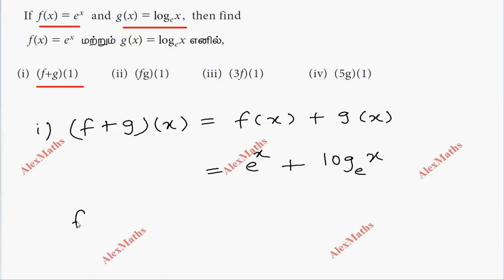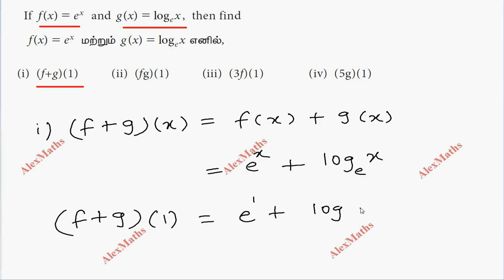The question is f plus g of 1. If you substitute x equal to 1, you get e power 1 plus log 1 base e. E power 1 is equal to e, and log 1 is equal to 0. So the total answer is e.